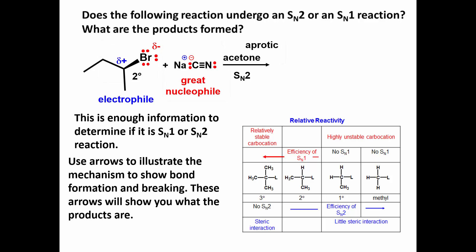Use arrows to illustrate the mechanism and show bond formation and breaking. These arrows will show you what the products are. Now, negative goes to positive.